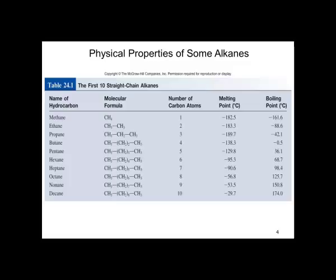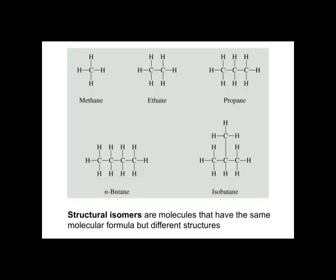The molecular formula is also shown. Structural isomers are molecules that have the same molecular formula but different structures. Compare n-butane (normal butane) with isobutane — both have four carbons.